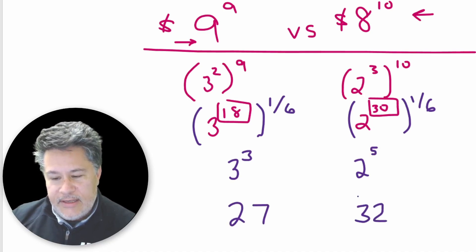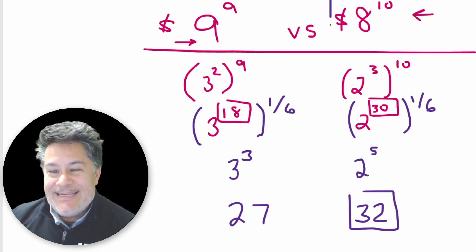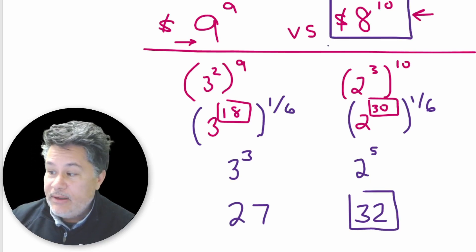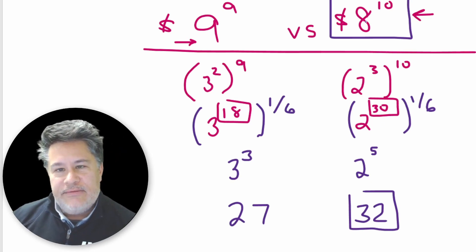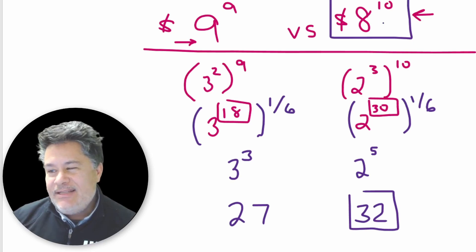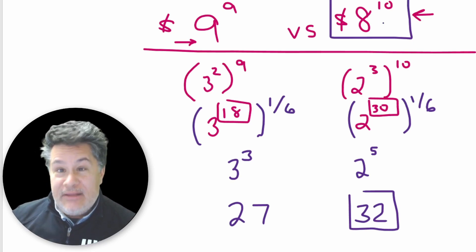And I think you'd agree that since thirty-two is bigger than the original, eight to the tenth must also be bigger. And indeed it is. If you guys run the calculation, I'll leave it to you. You're going to find out that eight to the tenth is a little bit more than a billion dollars.